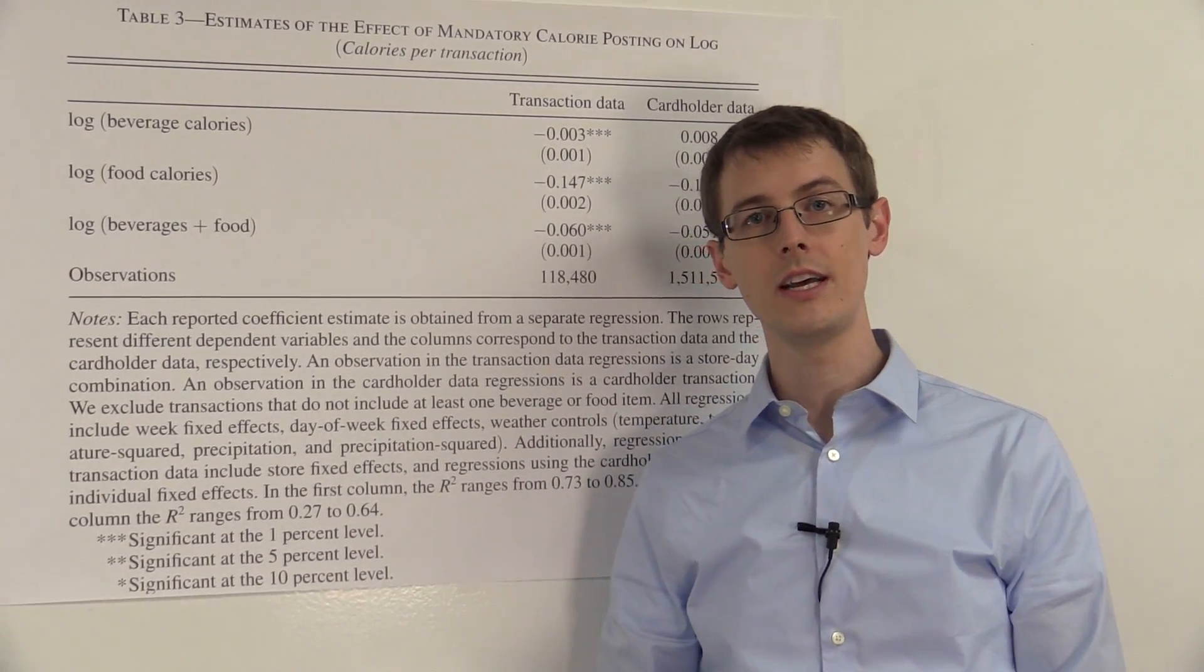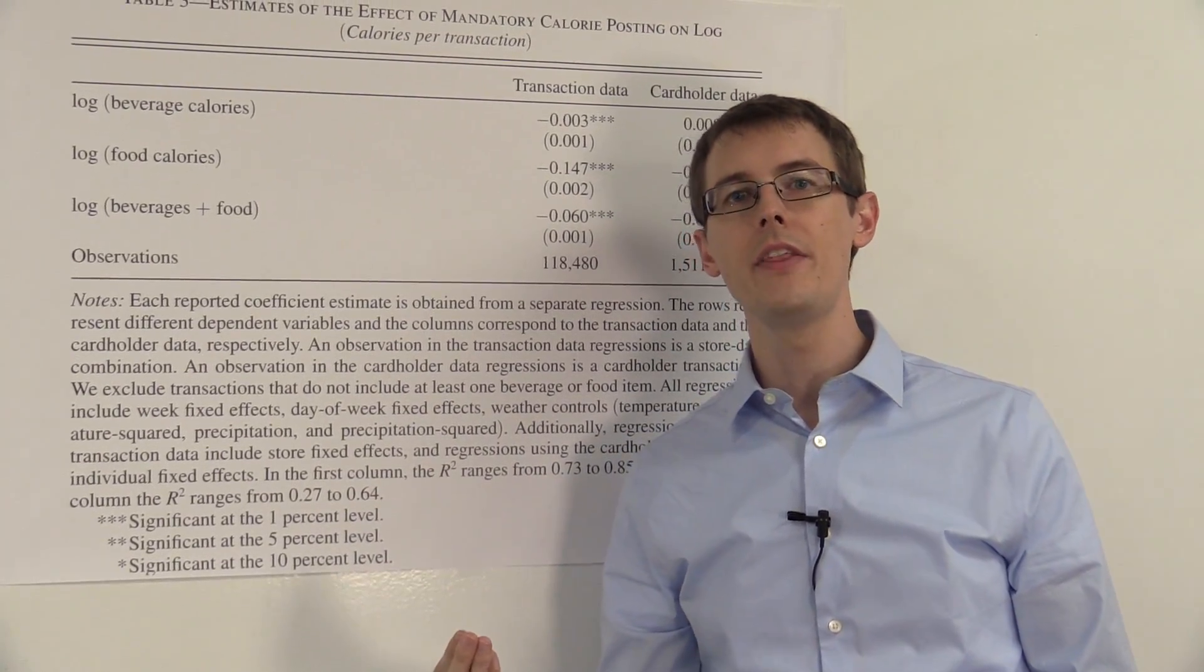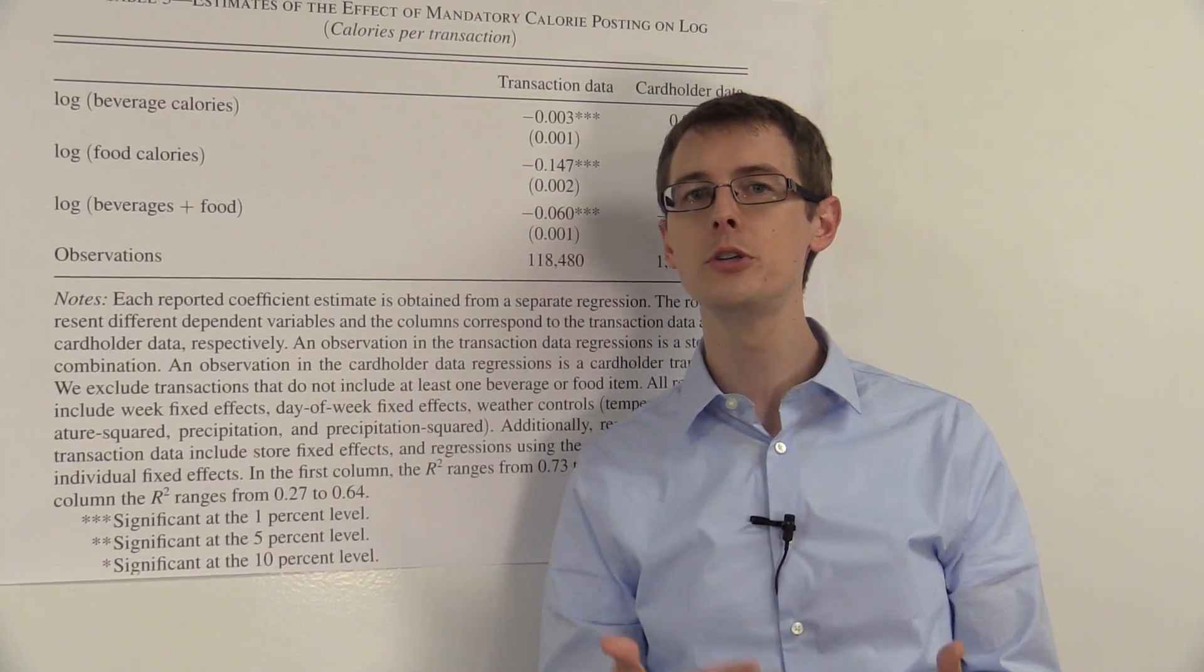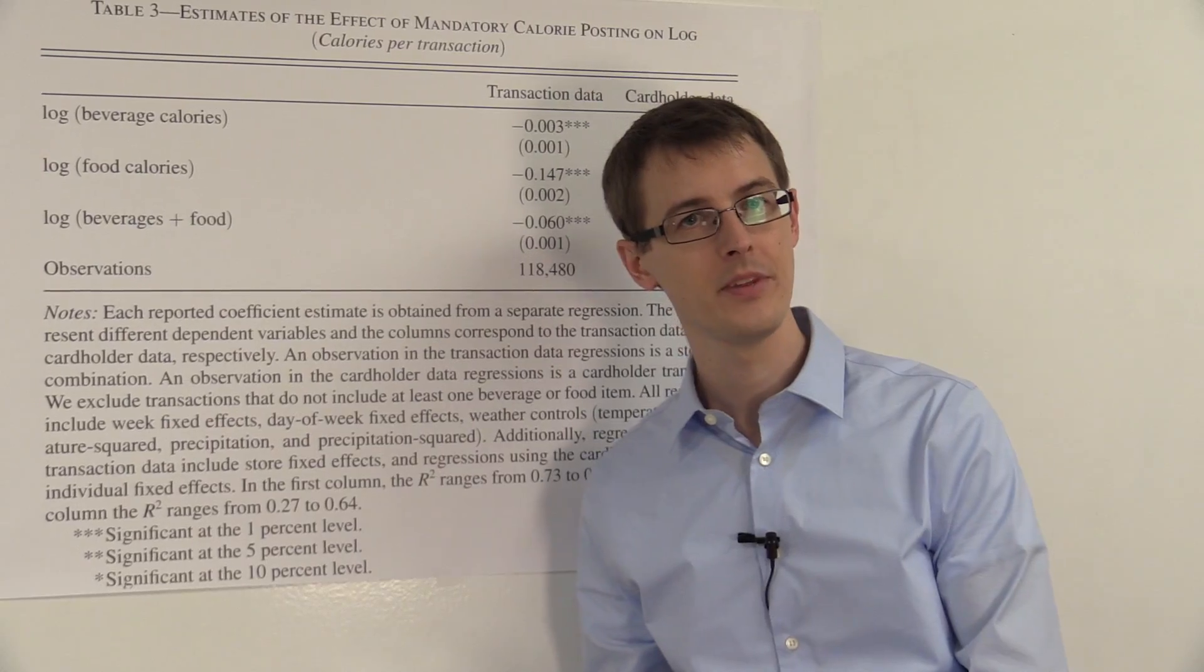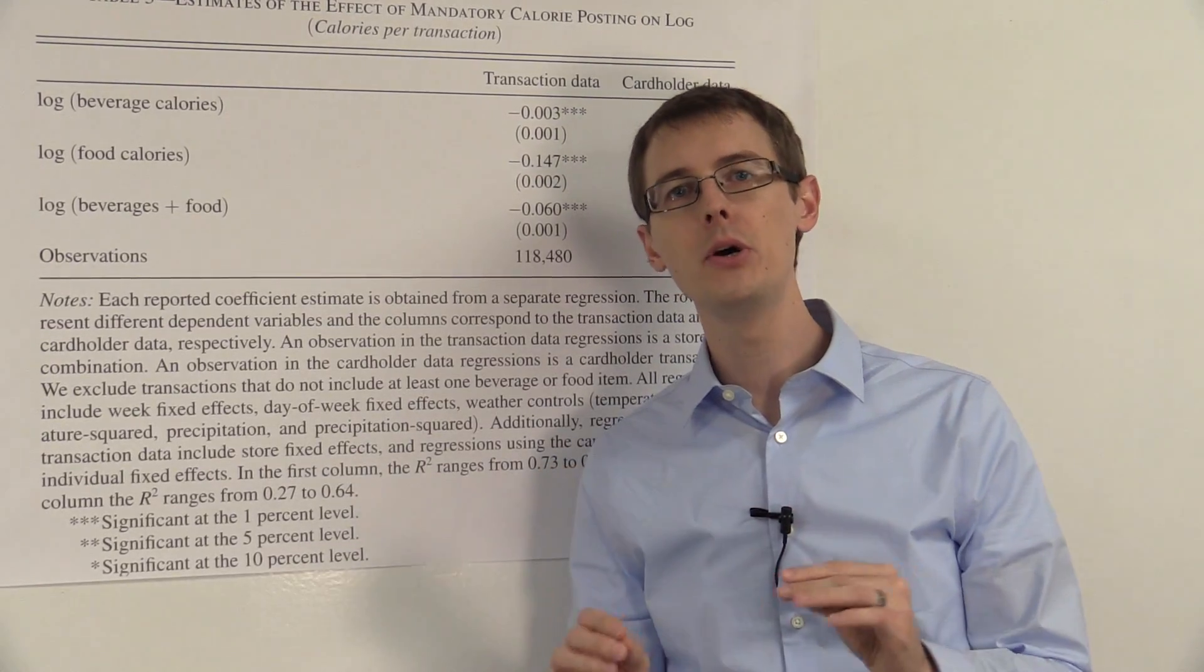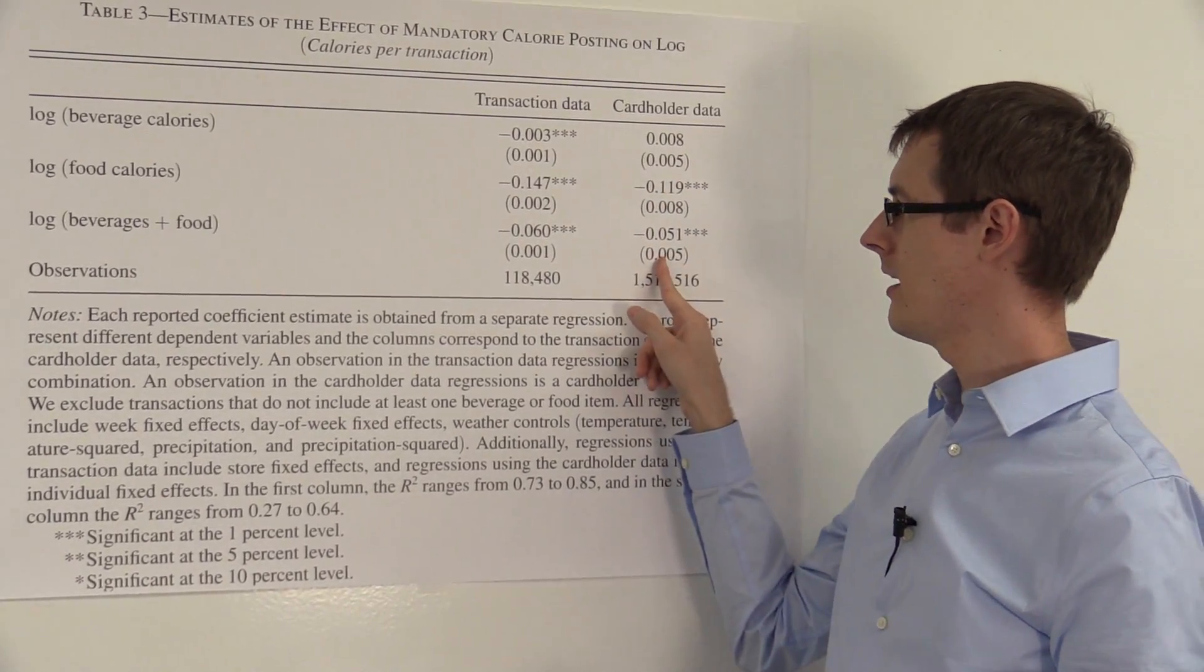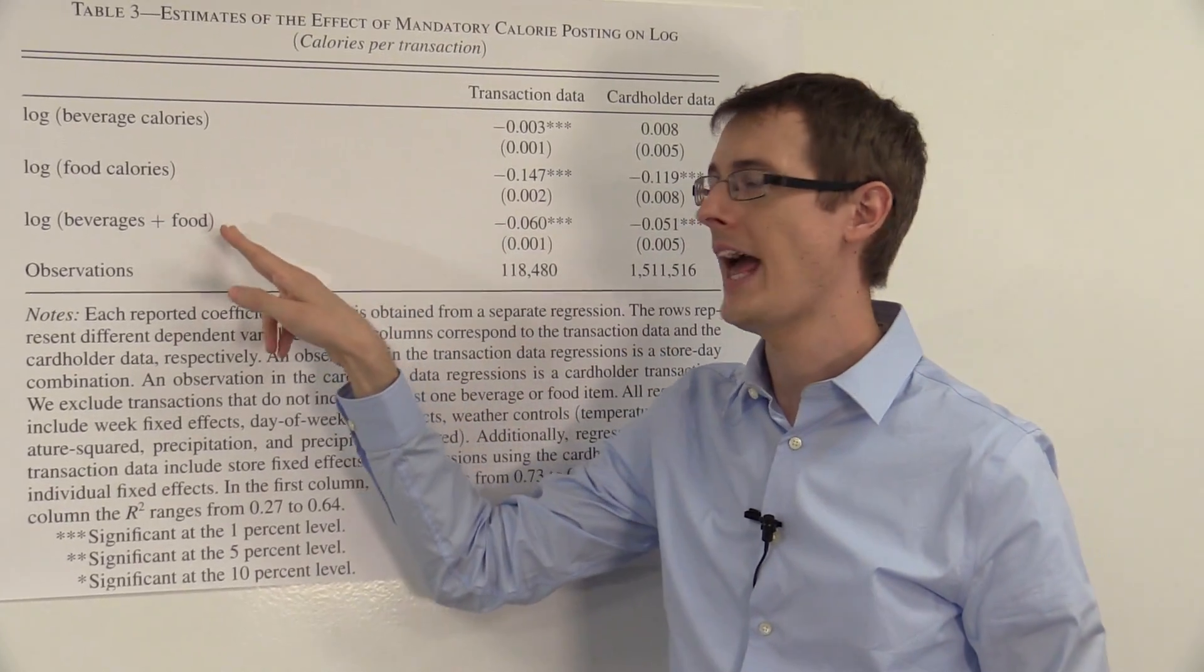They make the common trends assumption which says that if the law was not passed in New York City then calorie consumptions would have continued along the same trend as what happened in Boston and Philadelphia. So we use Boston and Philadelphia to construct the counterfactual of what would have happened in New York City if the law wasn't actually passed. So once they actually do all of their statistics, they're going to compute a causal effect which is what they've shown in this table here. Now there are six different causal effects shown for two different data sets and three different outcome variables.